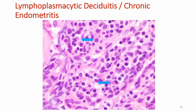Massive perivillous fibrin deposition is another entity that can occur at really any gestational age — it's an effacement of the intervillous space by fibrinoid material that envelops the chorionic villi. It can be challenging to diagnose in early pregnancies because prostaglandin or misoprostol administration can also cause deposition of fibrinoid material. Additionally, you could get focal areas of fibrin deposition normally or larger areas if there's been retention of products of conception. Lymphoplasmacytic deciduitis and chronic endometritis: the presence of plasma cells in the endometrium of non-pregnant women or in the decidua of pregnant women always indicates an inappropriate local antigen stimulation. It's been found in association with anywhere between 10 to 30% of spontaneous abortions overall, and has been associated with issues regarding implantation, recurrent pregnancy losses, and fetal demise.